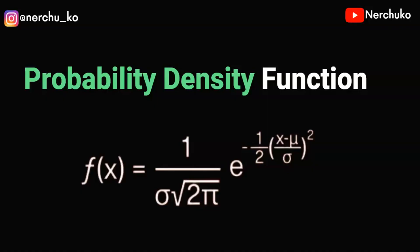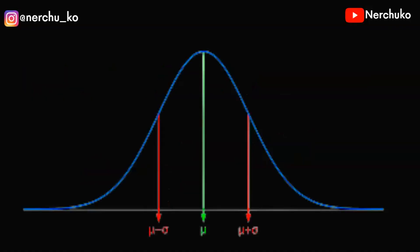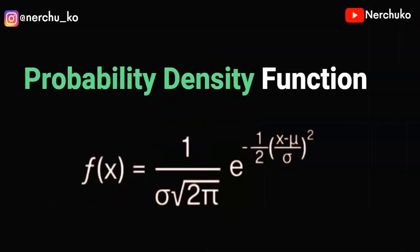I am going to show you the previous video for clarity — calculating the mean and standard deviation. We are going to use the probability density function and plot the Gaussian distribution. Suppose I take a population data set. In the population data set, we have random variable x, and we calculate the observation f(x).